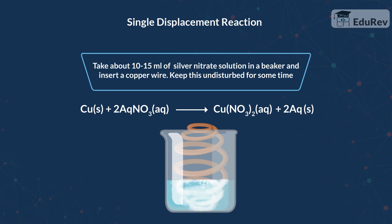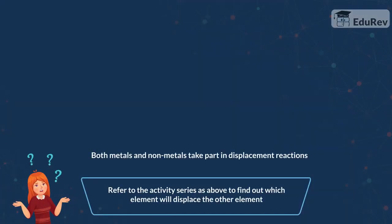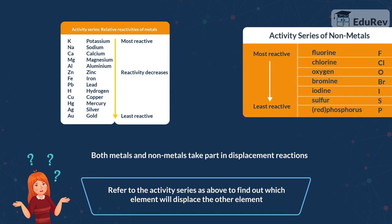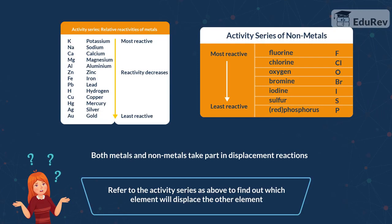Now I can make some silver jewellery out of it! How do you know which element is more reactive than the other? Here is an activity table that you need to refer to to find out your answers. Both metals and non-metals take part in displacement reactions. From the activity series, it will be seen that a more active element will displace a less active element from a solution of its salt.